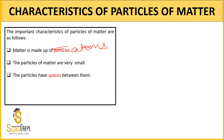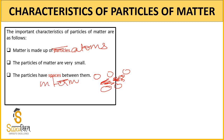The particles of matter have spaces between them. These spaces are called inter-molecular spaces. The amount of space depends on which state of matter we are talking about. For example, the inter-molecular space is different for different objects and different states of matter.